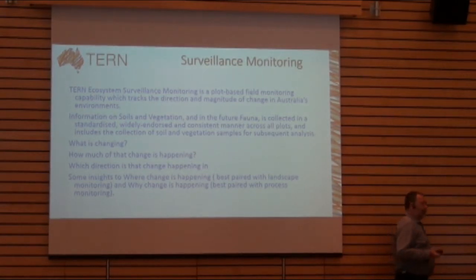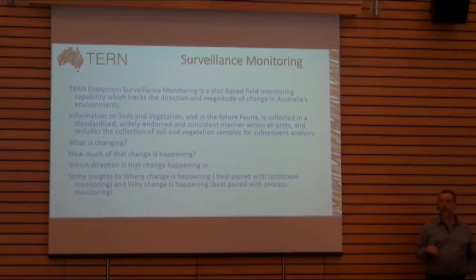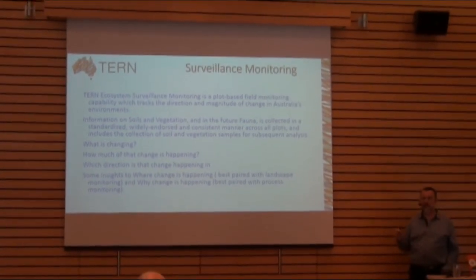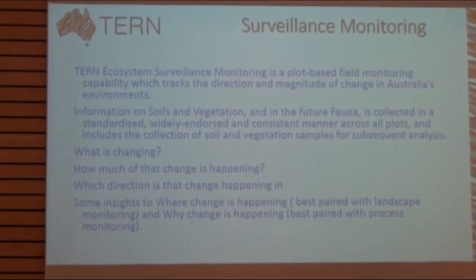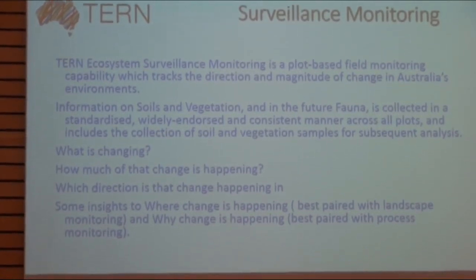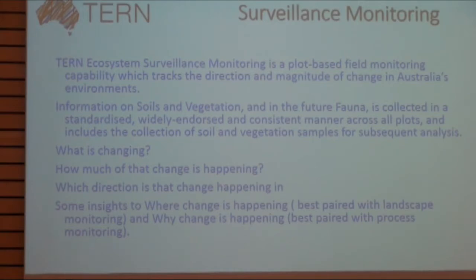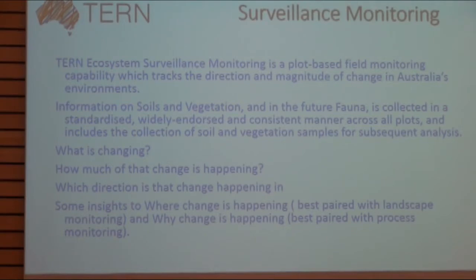Surveillance monitoring is a plot-based field monitoring capability that tracks the direction and magnitude of change in Australia's environment. To do that, we collect field information and samples — a big component being soils and vegetation samples, and aspirationally components of fauna which we're just beginning to look at. We use a standardised, widely agreed method across the entire continent, including samples that researchers can use, to address questions of what is changing, how much, and in which direction.